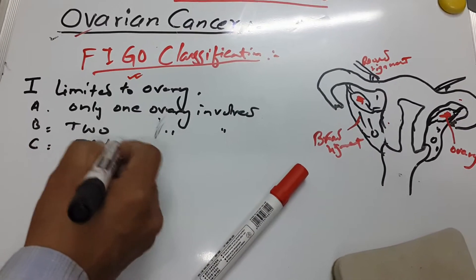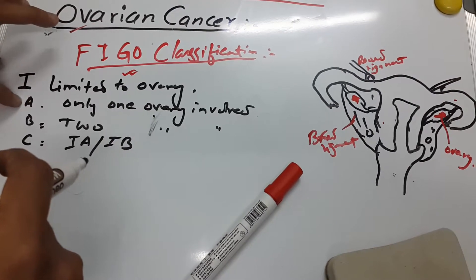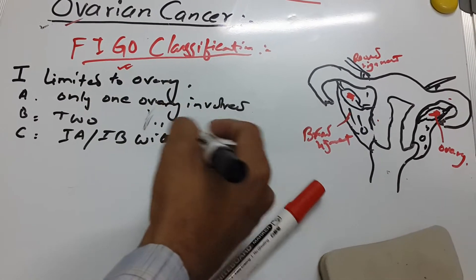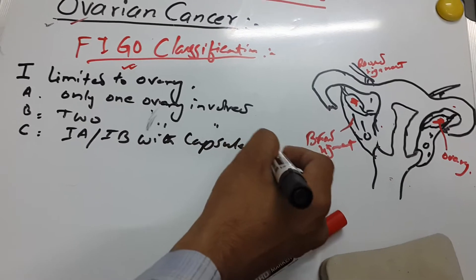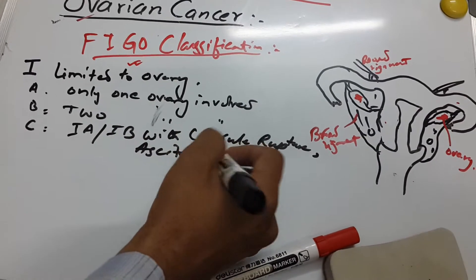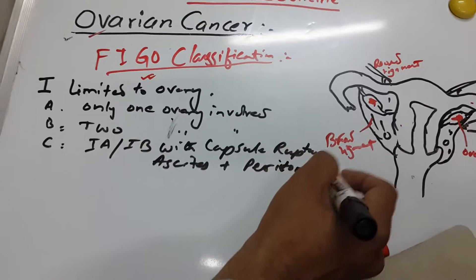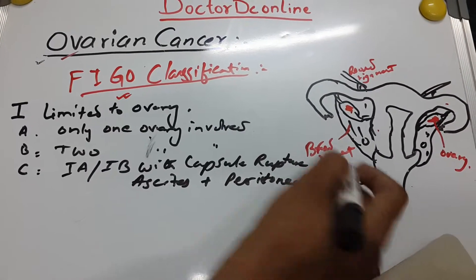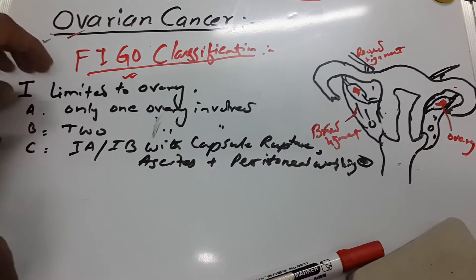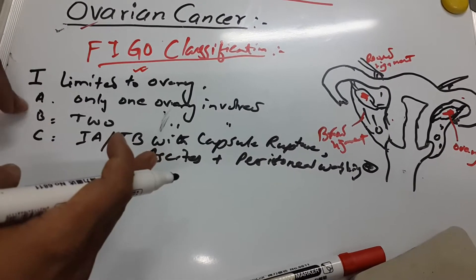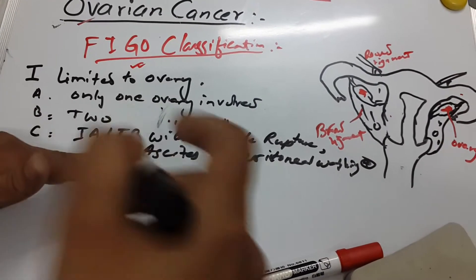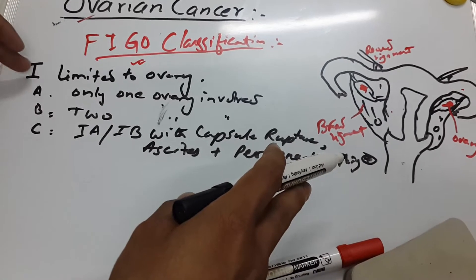Stage IC means IA or IB with capsule ruptures, ascites, and positive peritoneal washing. To summarize: Stage IA is only one ovary involved, IB means two ovaries involved, and IC means IA or IB with capsule ruptures, ascites, and peritoneal washing positive.